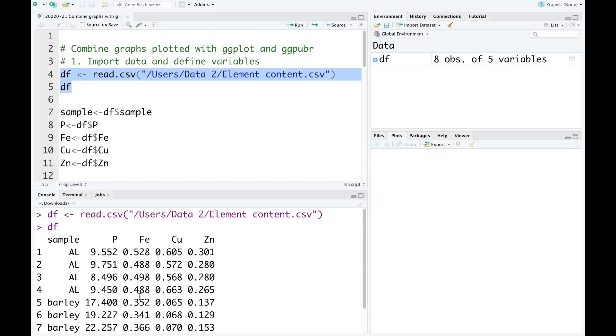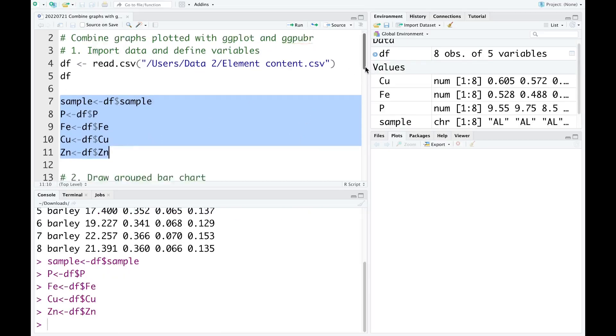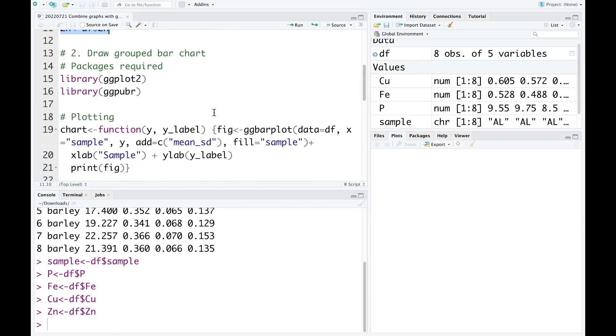This is the data I'm going to use today. The data shows the concentration of four elements including phosphorus, iron, copper, and zinc in two different types of samples: avocado leaves and barley. Now I'm going to define the variables. After this, we're going to draw four graphs.